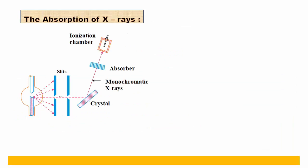As x-rays pass through the material, absorption takes place to some extent, and this depends upon the thickness of the material. As the substance or material is inserted in the path of the x-ray beam, the intensity of the transmitted beam decreases. We will now discuss how this decrease in intensity occurs using the figure.